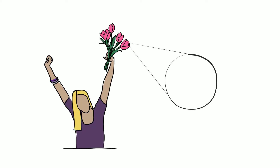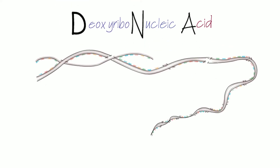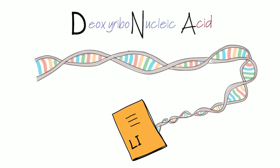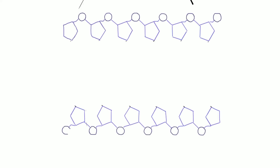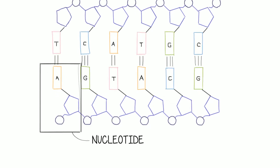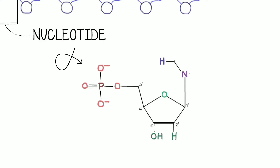From human beings to plants and every organism in between, DNA, or deoxyribonucleic acid, is a carrier of our unique genetic code and holds the instructions to life. DNA is a polymer made up of nucleotides. Each nucleotide comprises a phosphate group, a five-carbon base sugar molecule — where it gets its name from deoxyribose — and one of four nitrogenous bases.